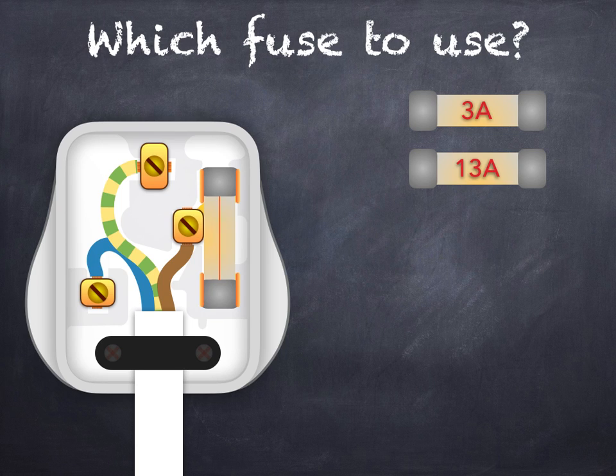If a fault develops in the electrical device, this can cause the current to increase and so a wire inside the fuse melts. This means there's now no current in the flex, so there's no chance of it overheating and starting a fire. So the fuse is basically a safety device.